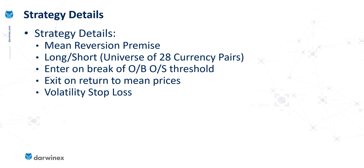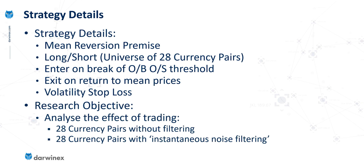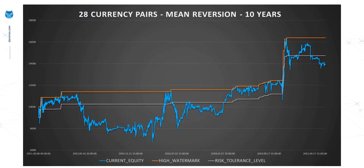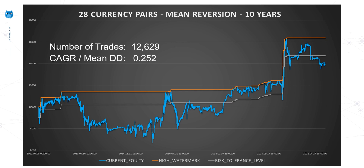The strategy I'll be using for this study is identical to the strategy seen in the previous two episodes, so I won't cover those details again. The specific objective is to compare trading 28 currency pairs with no filtering at all against trading them using instantaneous noise filtering. Just like the previous two episodes, I'll be using the efficiency ratio as the measure of noise. We start from the same baseline: trading the mean reversion strategy on all 28 pairs with no filtering, producing just over 12,000 trades, with a compound annual growth rate over mean drawdown score of just 0.25.